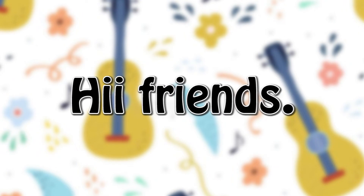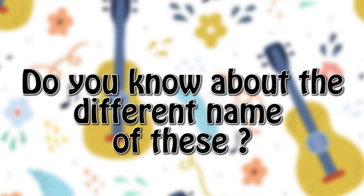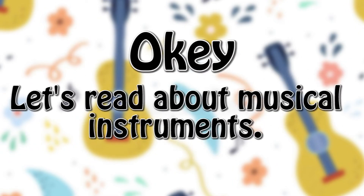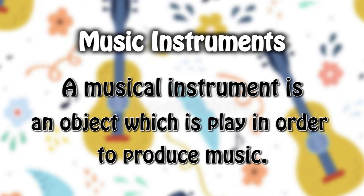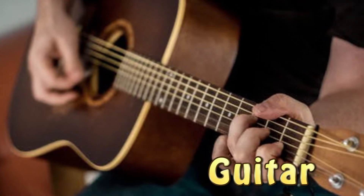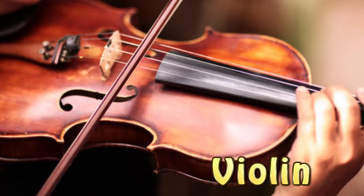Hi friends! Have you ever played a musical instrument? Do you know about the different names of these? Let's read about musical instruments. A musical instrument is an object which is played in order to produce music: guitar, violin.